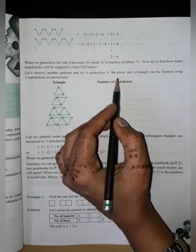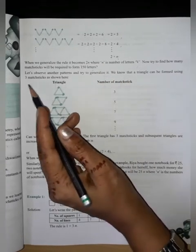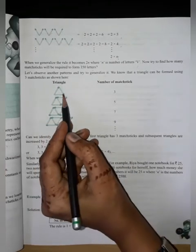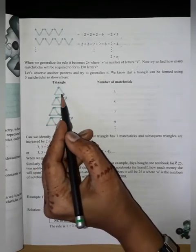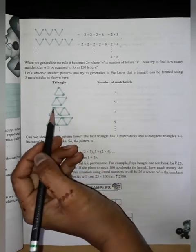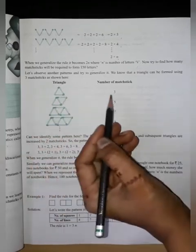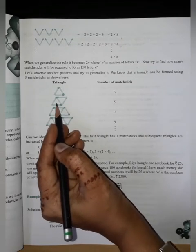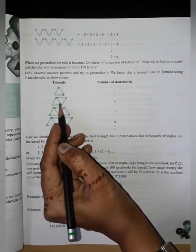We know that a triangle can be formed using three matchsticks as shown here. Triangle, we have three matchsticks used. Three means three number. Then here's two in place, but here's one and two together in place, two matchsticks.